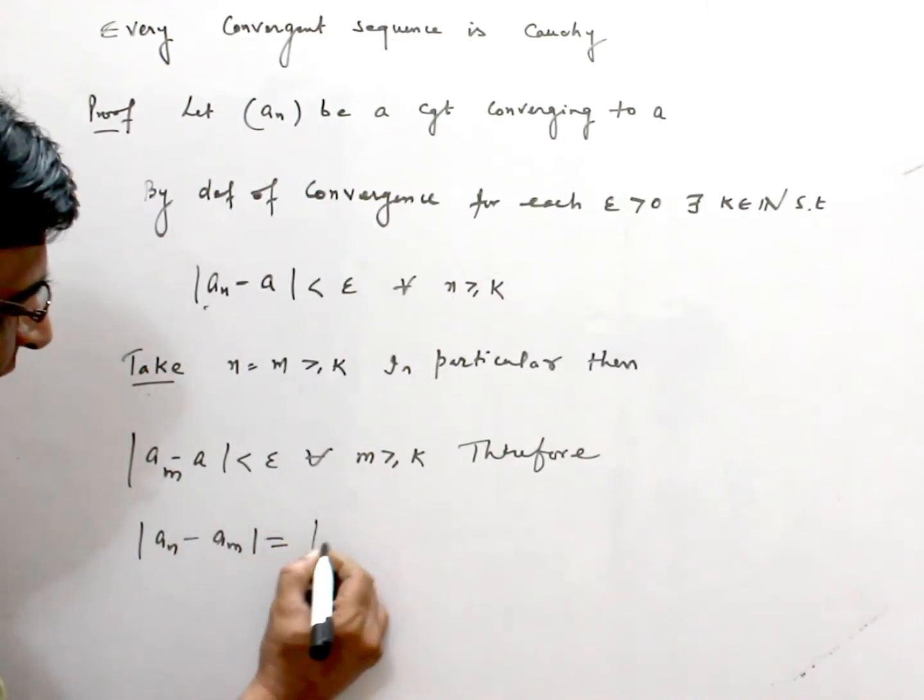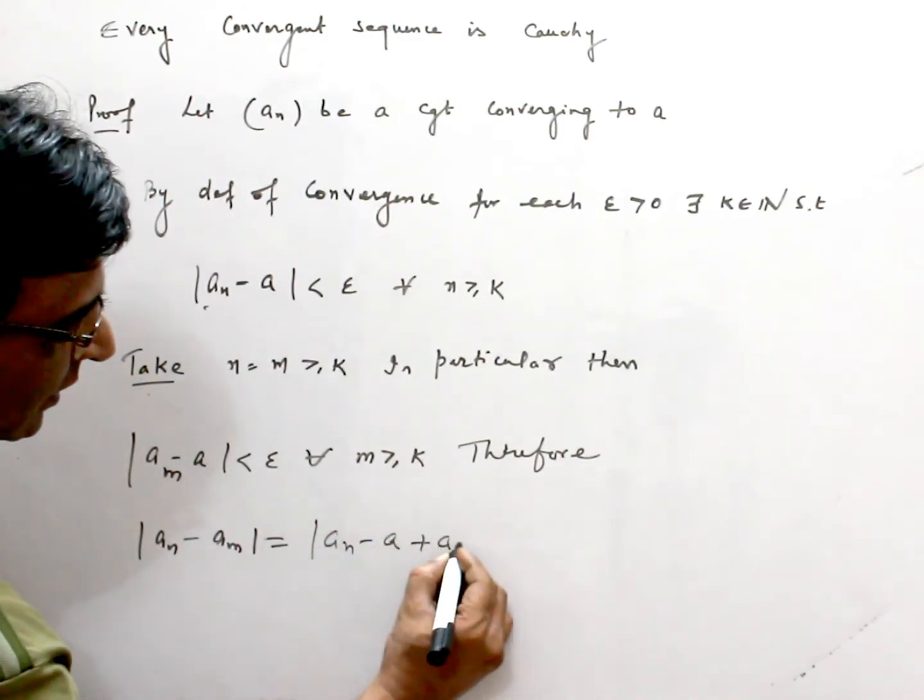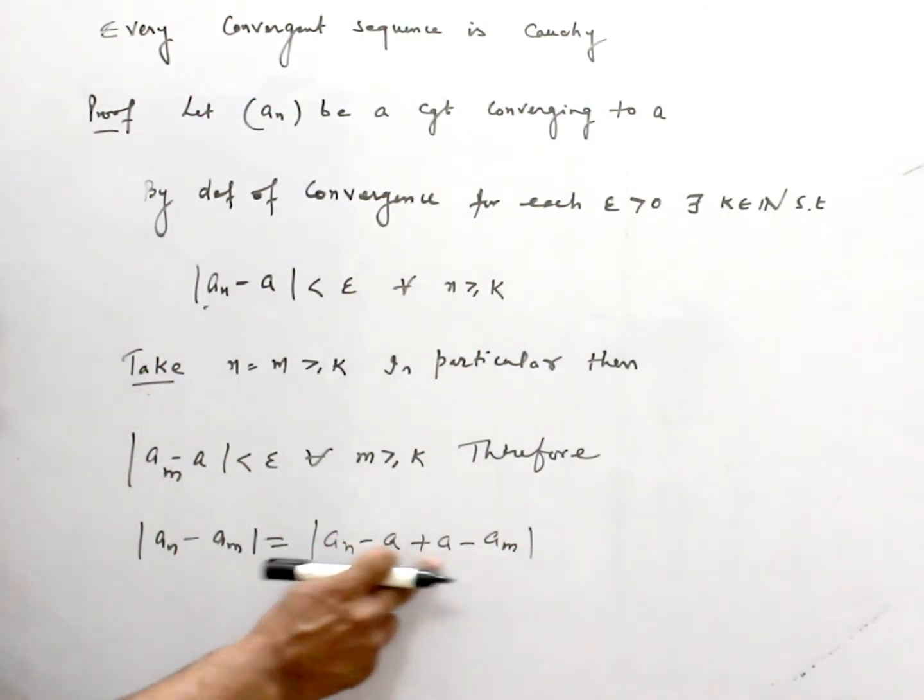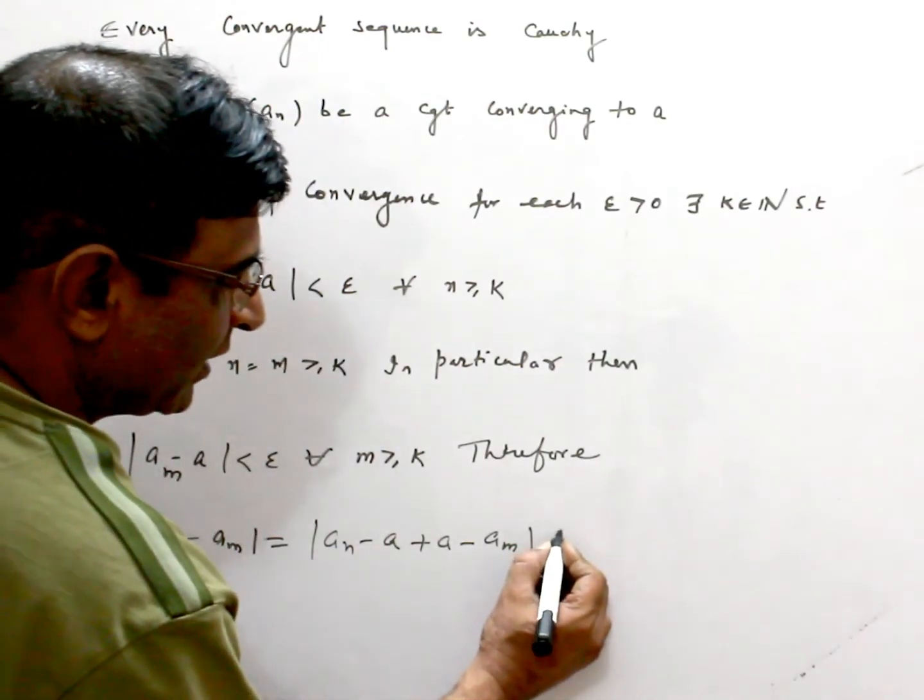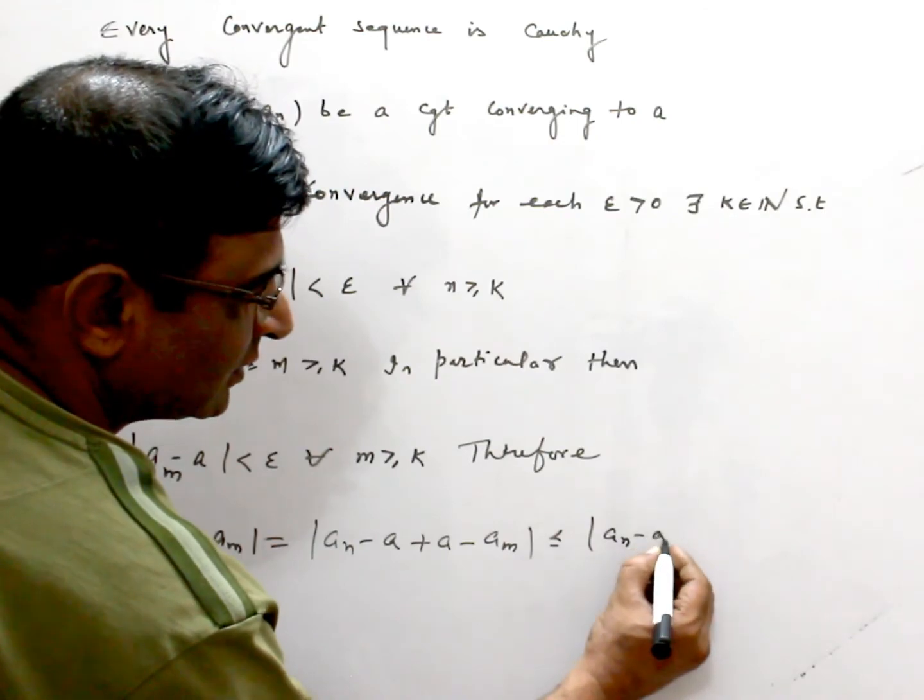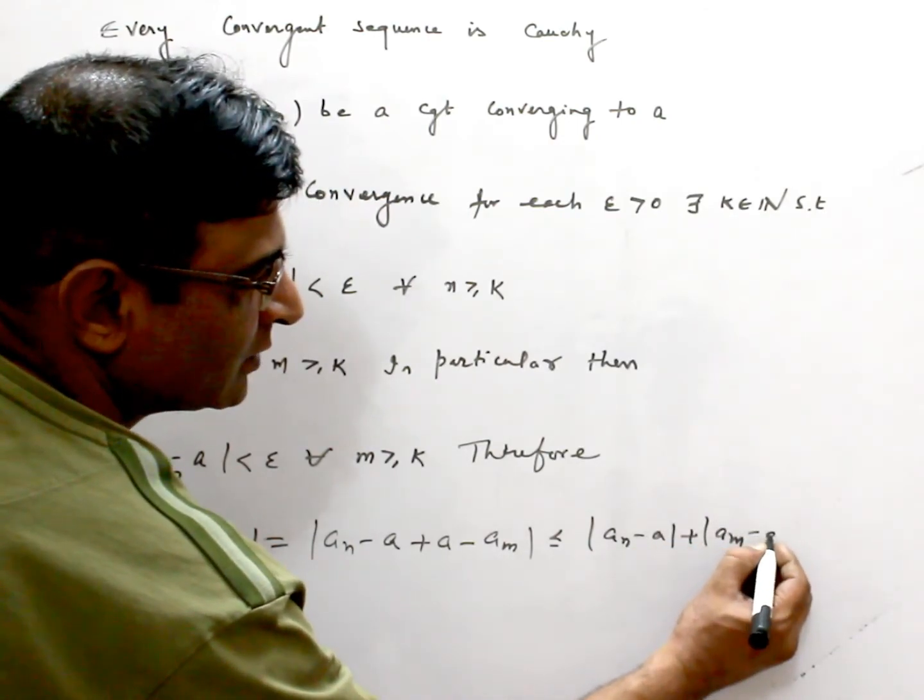This can be written as |An - A + A - Am|, where we add and subtract A. By triangle inequality, this becomes |An - A| + |Am - A|.